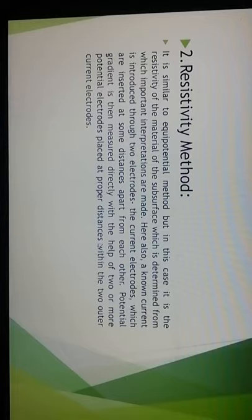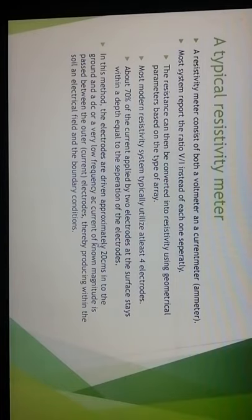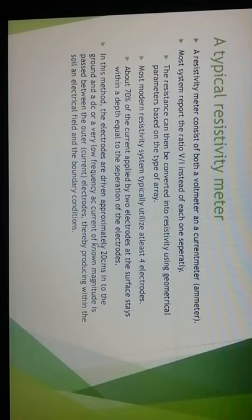The second method is the resistivity method. It is similar to the equipotential method, but in this case the resistivity of the subsurface material is determined, from which important interpretations are made. Current is introduced through two current electrodes inserted at some distance apart. The potential gradient is measured with two or more potential electrodes placed within the two outer current electrodes. A resistivity meter consists of both a voltmeter and a current meter (ammeter). Most systems measure the ratio V/I instead of each separately; the resistance can be converted into resistivity using geometrical parameters.